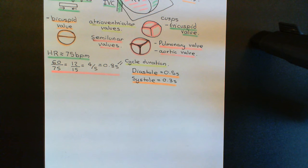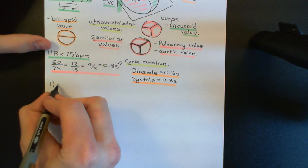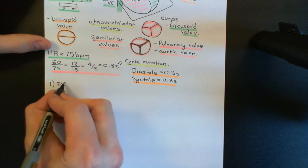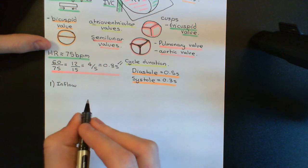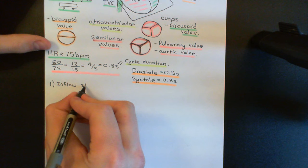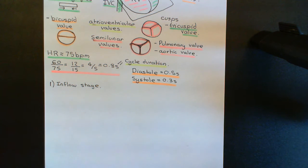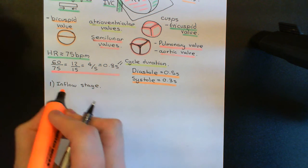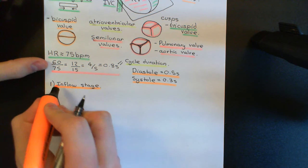The cardiac cycle is usually split down into four separate stages. Stage one is known as the inflow stage. All of the cardiac cycle is told from the perspective of the ventricles, so where is blood inflowing into? Of course it's going to be inflowing into the ventricles. Stage one of the cardiac cycle is where blood is flowing into the ventricles.